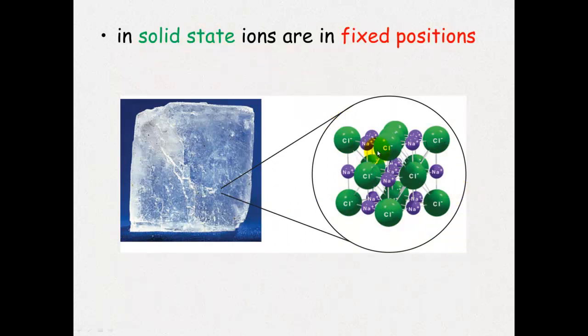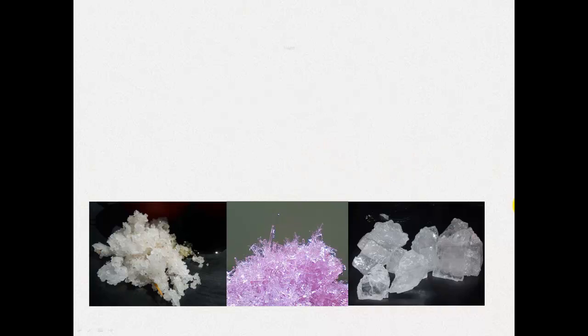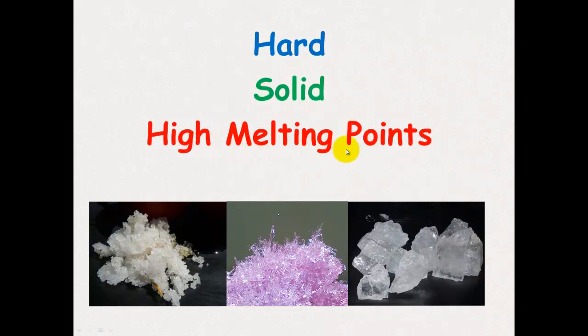In the solid state, these ions are in fixed position. So let's look at how this gives ionic compounds its properties. Ionic compounds are hard, they're solid, and they've got high melting points.